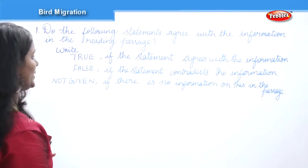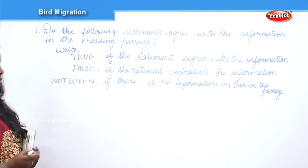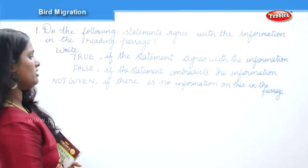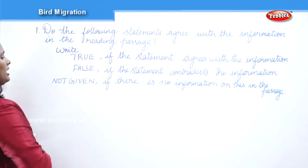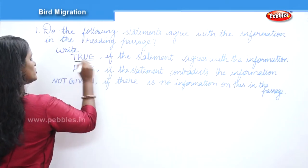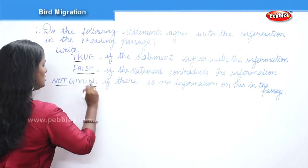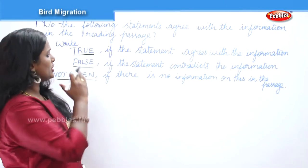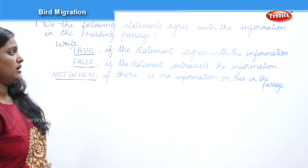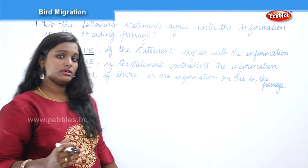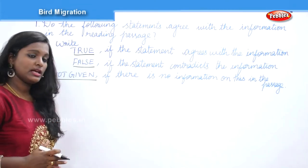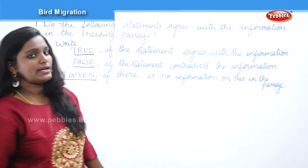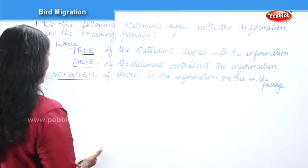Write TRUE if the statement agrees with the information, FALSE if the statement contradicts the information, and NOT GIVEN if there is no information. Let's move on to the first statement.